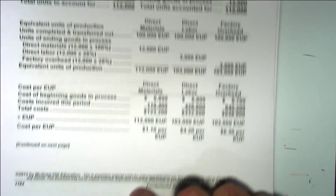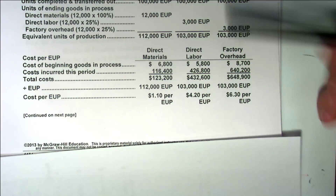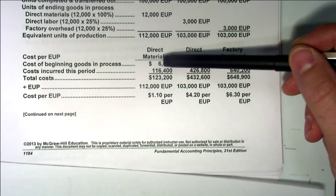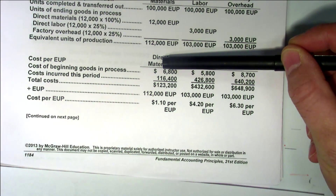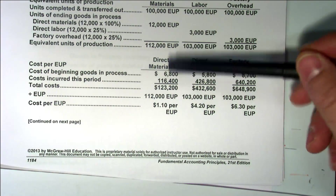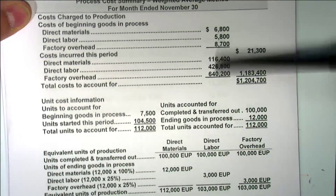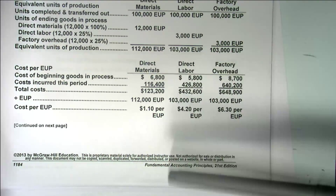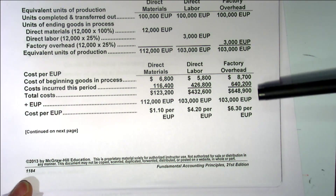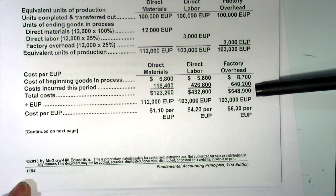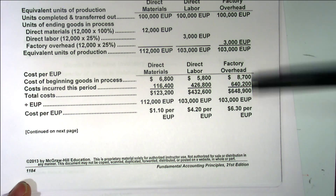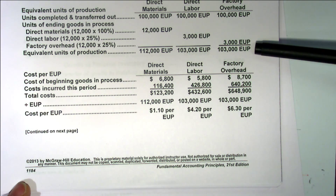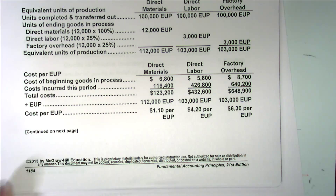Then we go to the top of the next page. We take these beginning goods in process and costs incurred this period for each product cost — we get that from up here — then we add those up to get our total costs. Then we divide that by the equivalent units of production that we computed, and we get cost per equivalent unit of production.